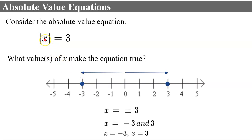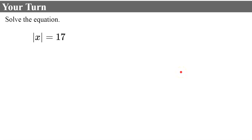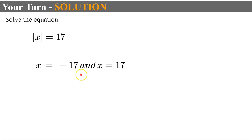Let's check: plugging in negative 3, the absolute value of negative 3 is positive 3. Plugging in 3, the absolute value of 3 is also 3. If asked to graph the solution, plot the two points on the number line — no shading or arrows, just two separate points. Your turn: solve the absolute value equation. Welcome back. The solution is x equals negative 17 and x equals 17, since the absolute value of both negative 17 and 17 equals positive 17.